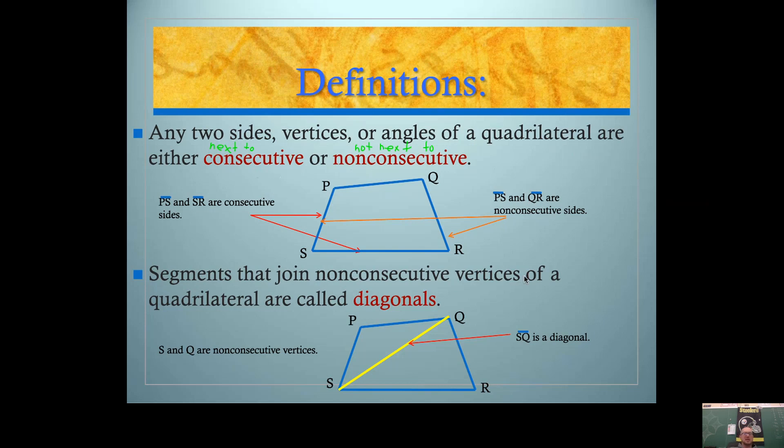Segments that join non-consecutive vertices of a quadrilateral are called diagonals. So I'm sure you've heard that term before. If you connect vertex Q with vertex S, notice how those are non-consecutive. That makes a segment. And that segment is called a diagonal because it connects the non-consecutive vertices.